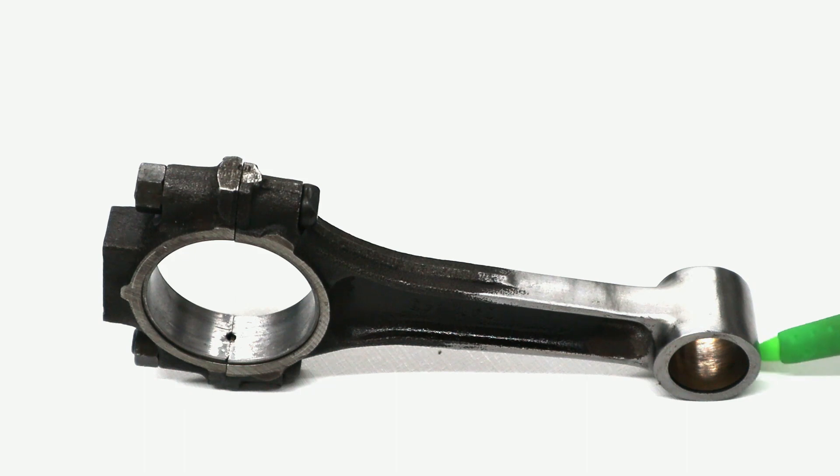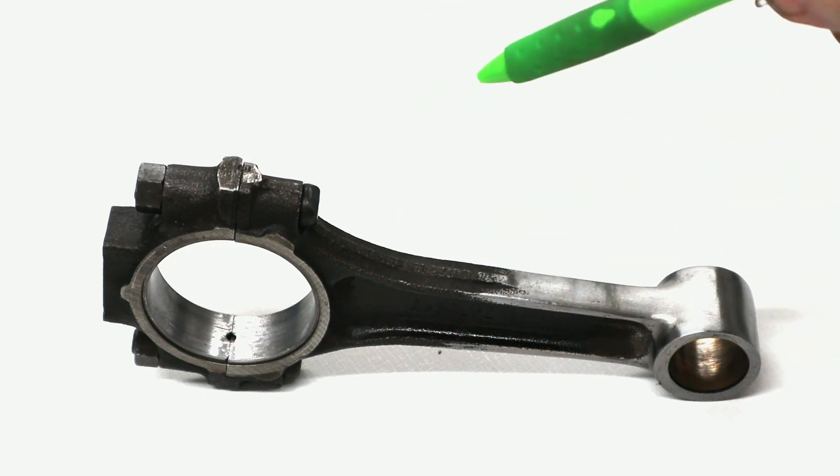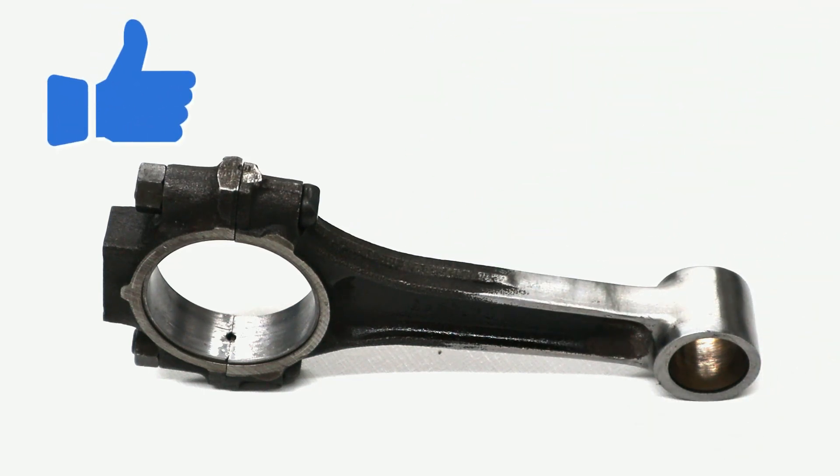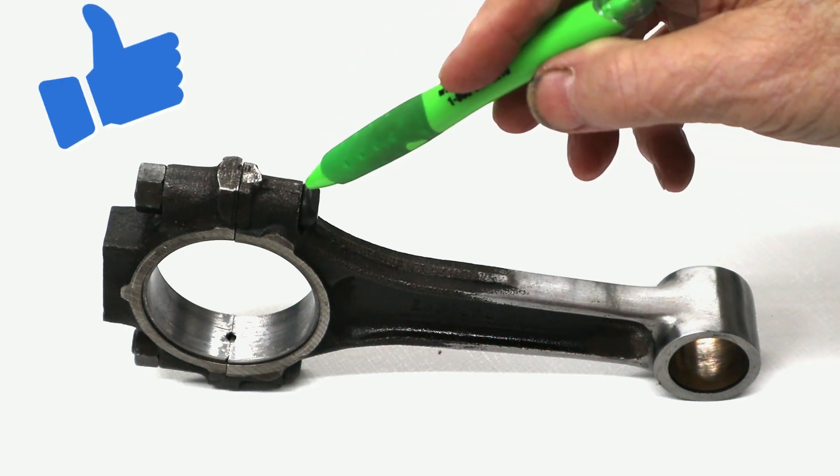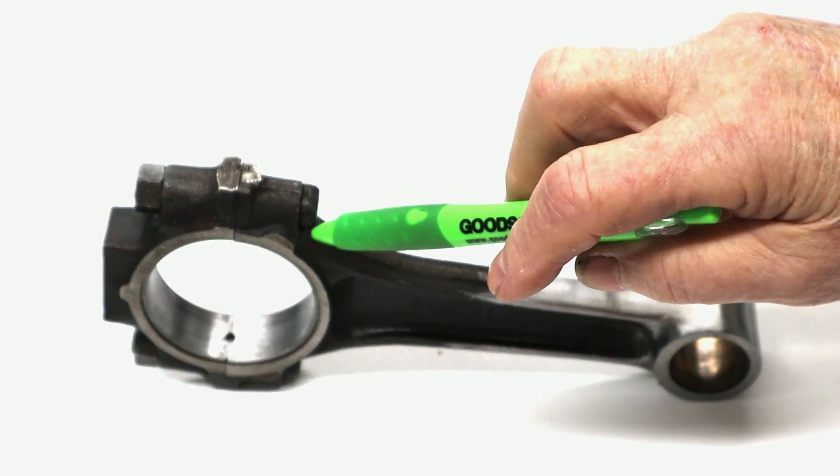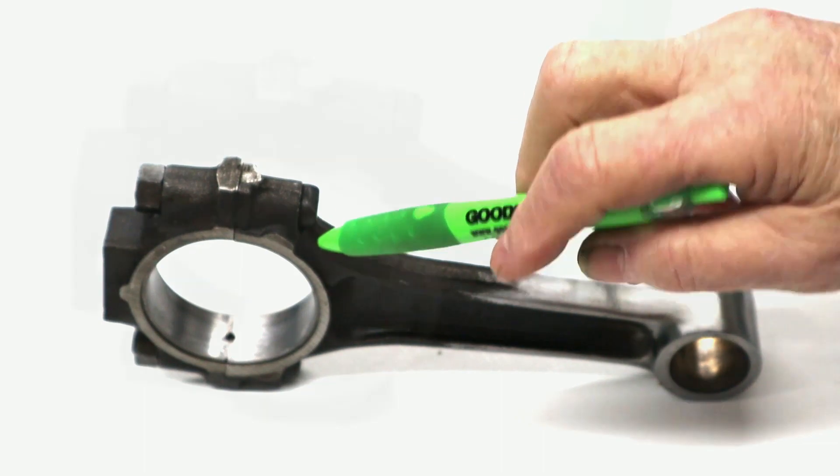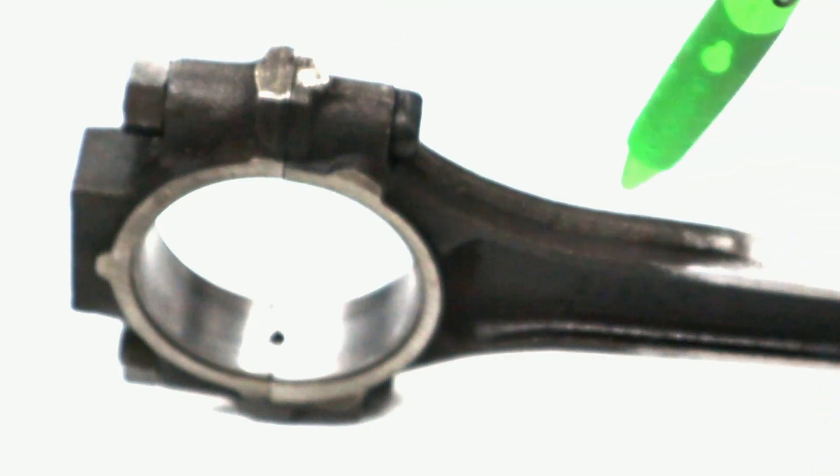Now we've got the wrist pin end almost done. I've still got a chamfer of these edges here. And we've got the top of the beam done. It's time to turn our attention to this part of the beam. Where the bolt has been inserted and to stop it turning when it's torqued up, there's a recess cut. And the bottom of this recess here forms a notch. Not good to have notches in rods.